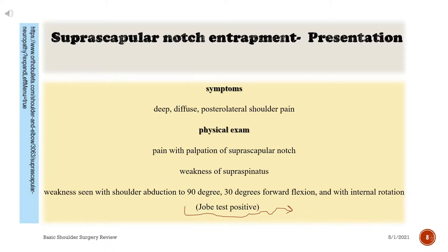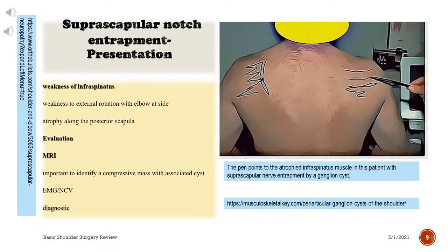Clinical presentation of suprascapular notch entrapment includes deep diffuse posterolateral shoulder pain. On physical exam, there is pain with palpation of the suprascapular notch and weakness of the supraspinatus. Weakness is seen with shoulder abduction to 90 degrees, 30 degrees forward flexion, and with internal rotation. The Jobe test is positive.